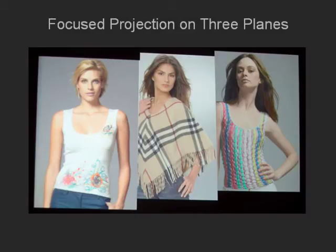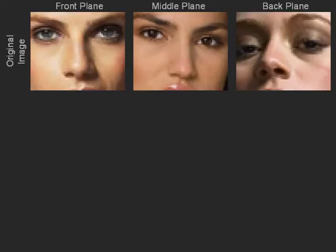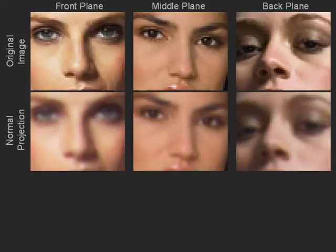Here we see an image with three people displayed on three planes at different depths. Adjacent planes are 15 inches apart. We concentrate on the face region to illustrate and compare image projections with and without our defocus compensation. Here we see the original images around the face region. Here are the images produced under normal projector setting, that is, without compensation.